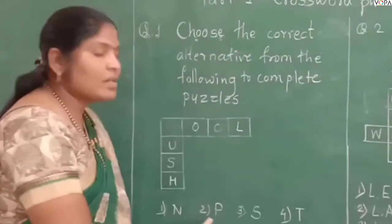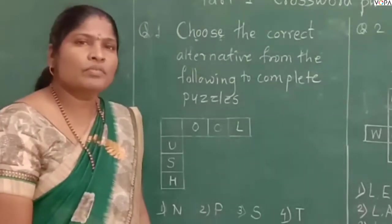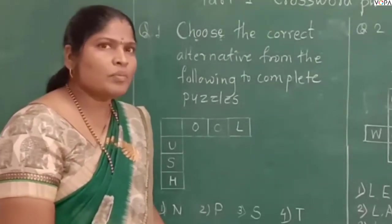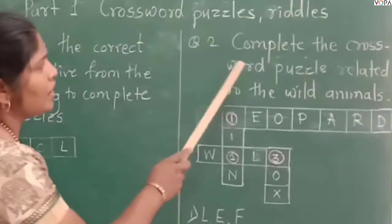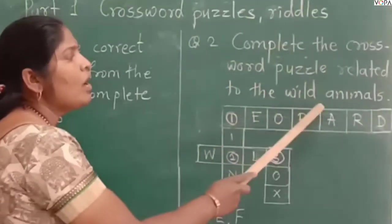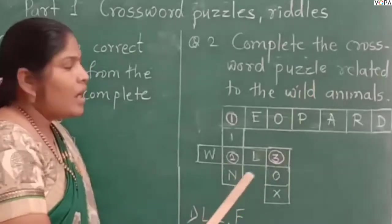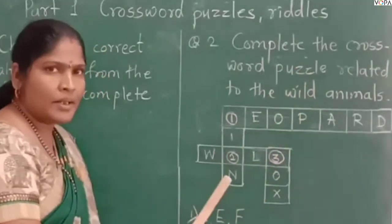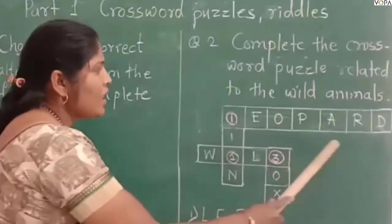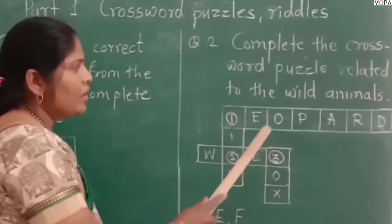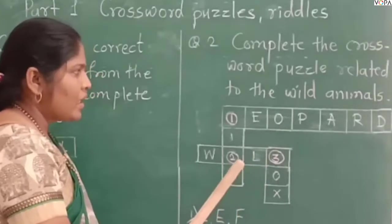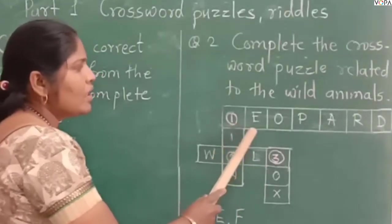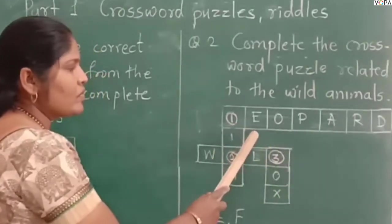Now for the second question: Complete the crossword puzzle related to wild animals. This puzzle is about wild animals. The answers in these boxes are names of wild animals.